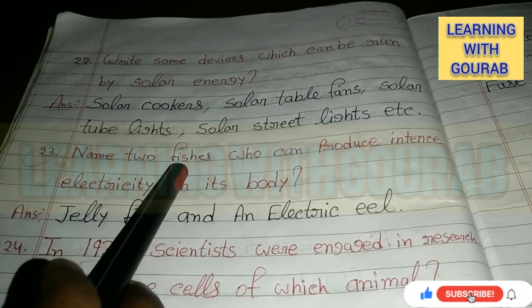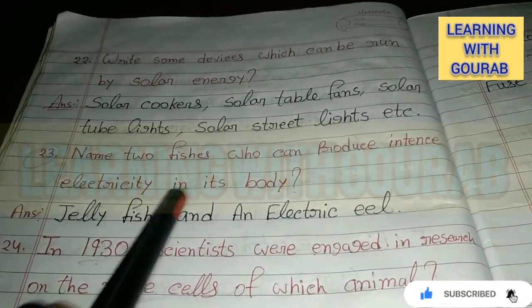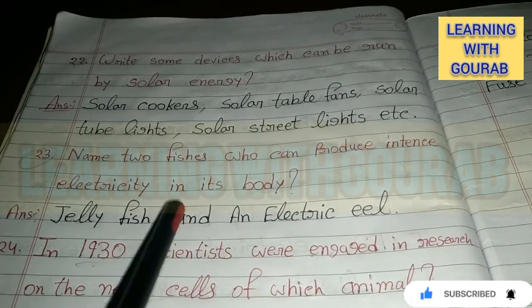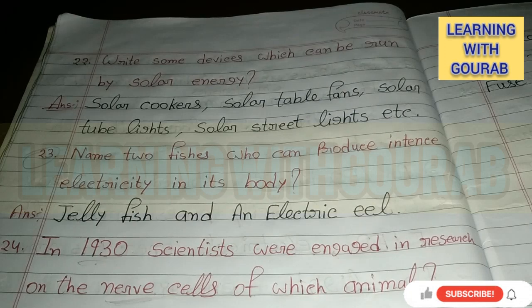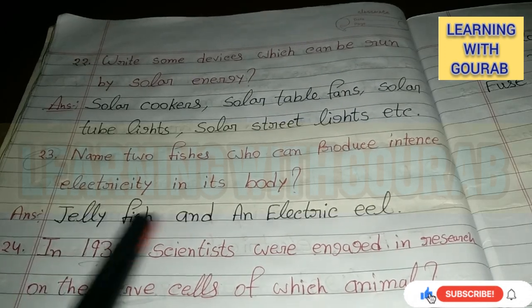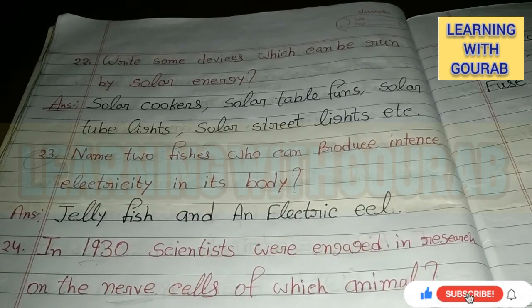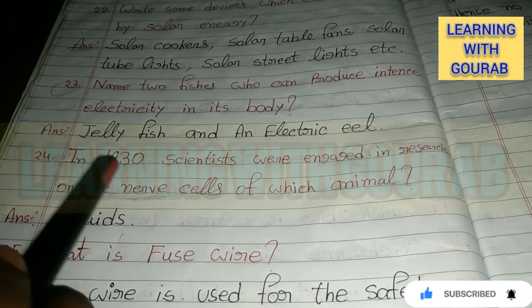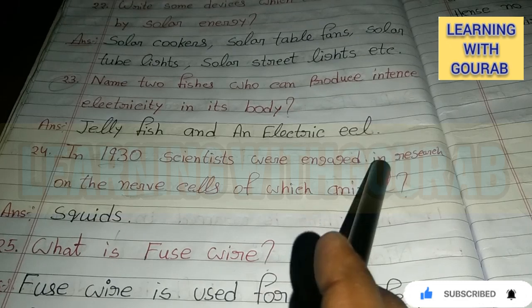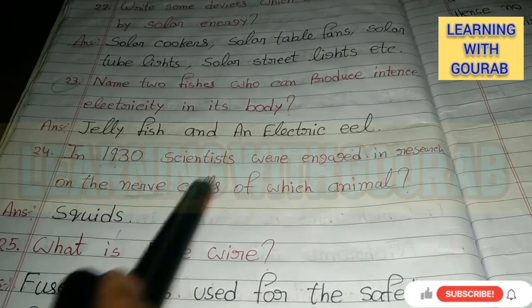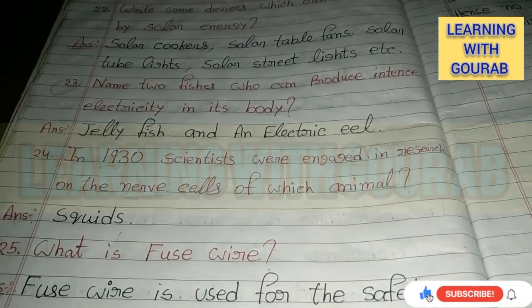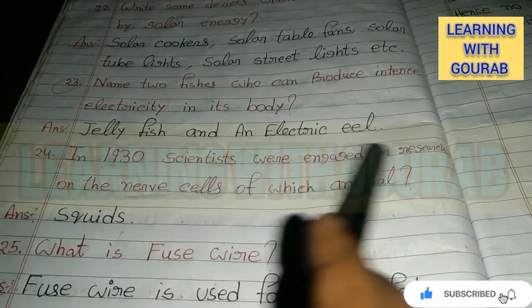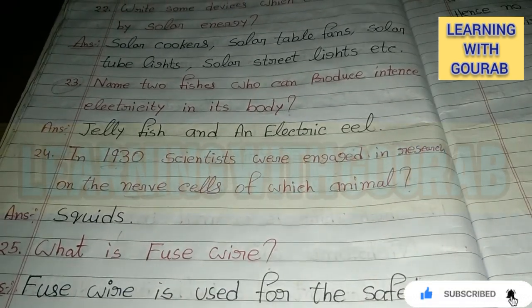Name two fishes that can produce intense electricity in their bodies. Answer: Electric ray and electric eel. Next: In 1930, scientists were engaged in research on the nerve cell of which animal? Answer: Squids.